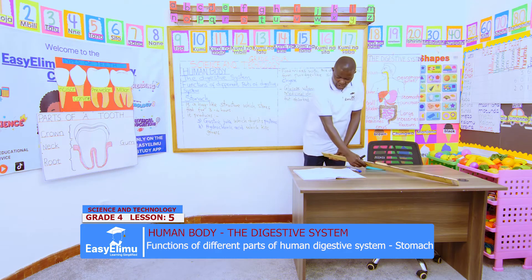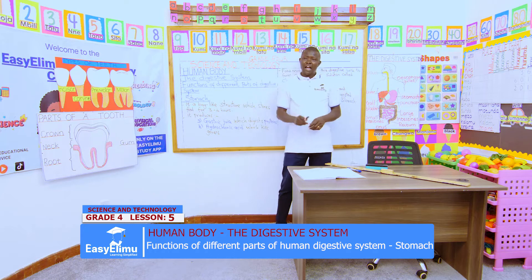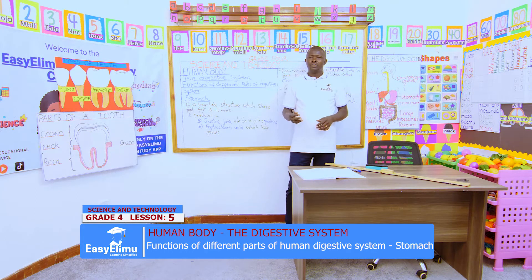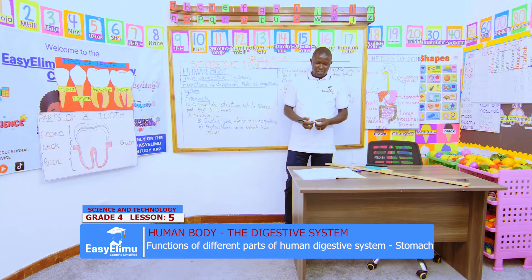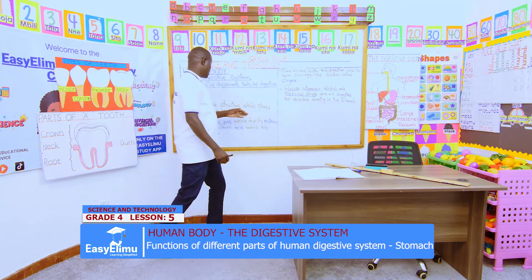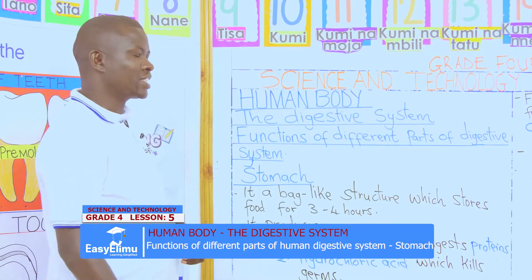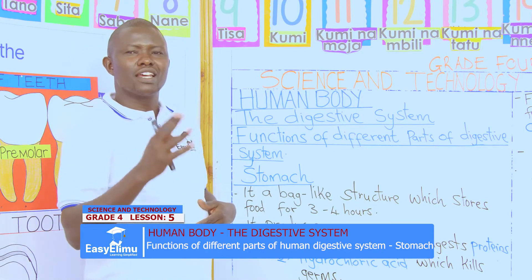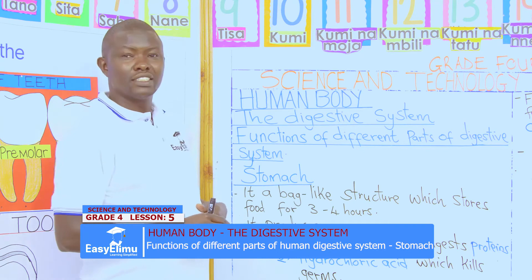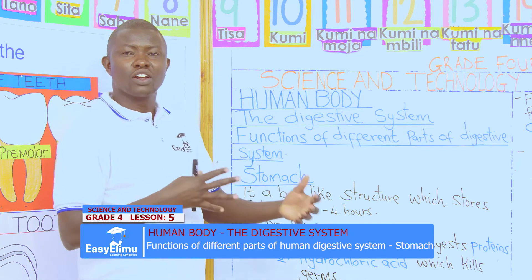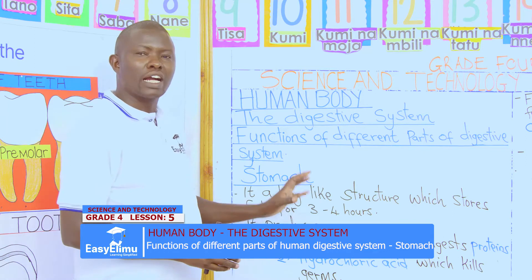This is the stomach. What is the function of the stomach? How does this stomach function to enable digestion in our body? We say the stomach is the bug-like structure which stores food for three to four hours. Once the food goes down to your stomach, it stays there for three to four hours. But inside the stomach, first it finds hydrochloric acid and mixes with it, and the hydrochloric acid will kill any germ that could have come with the food.